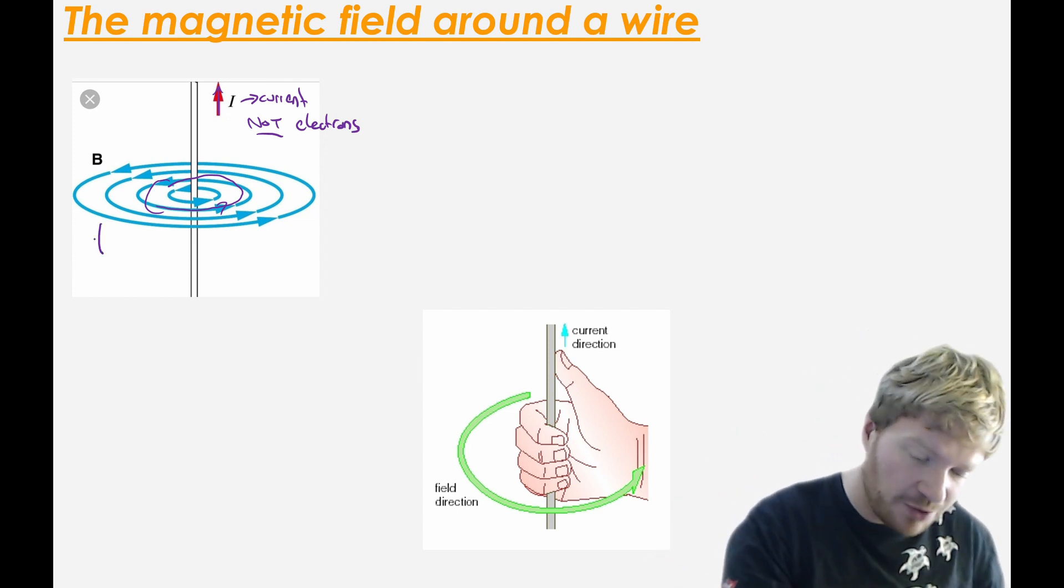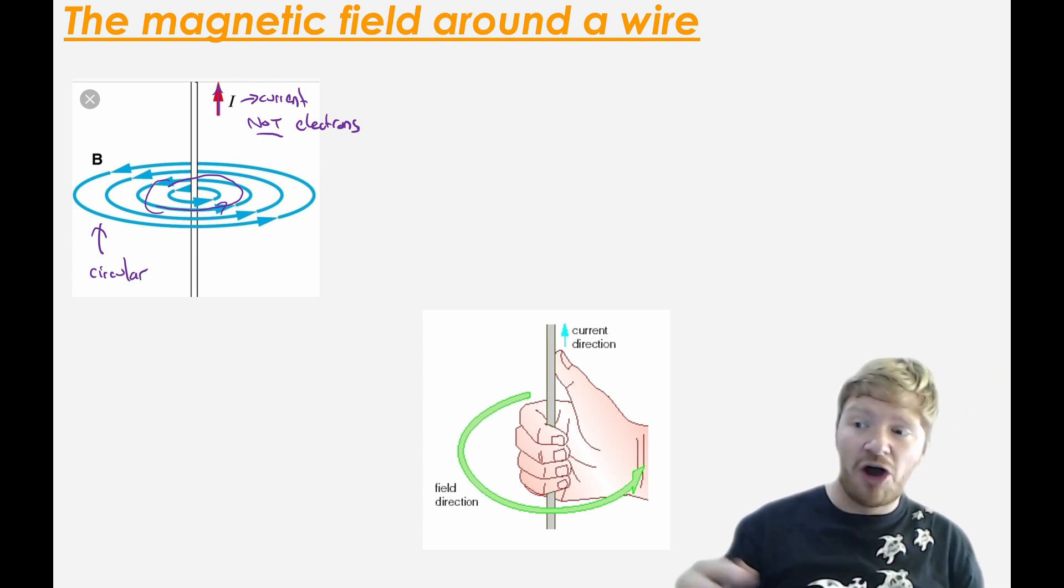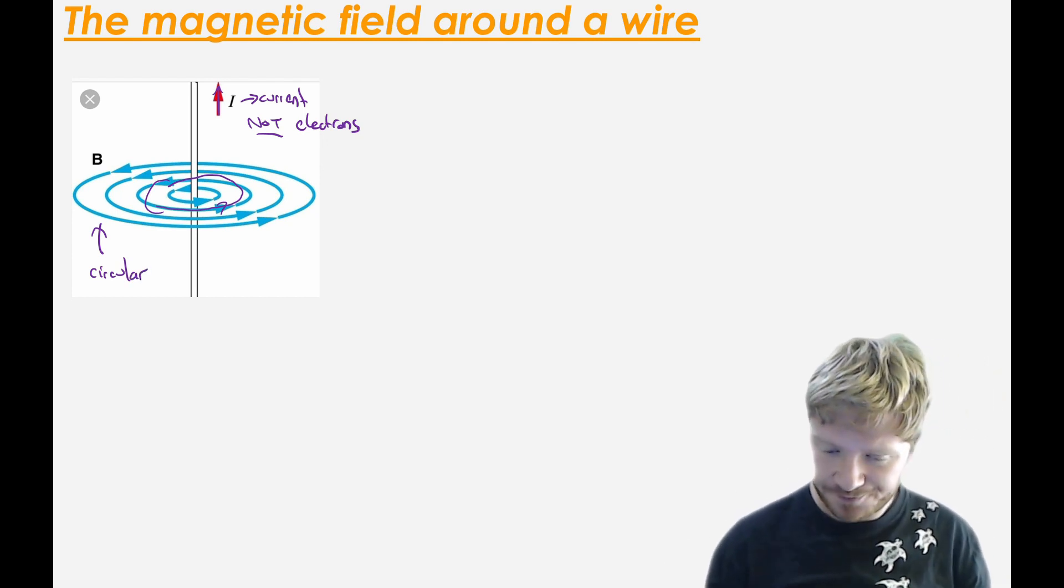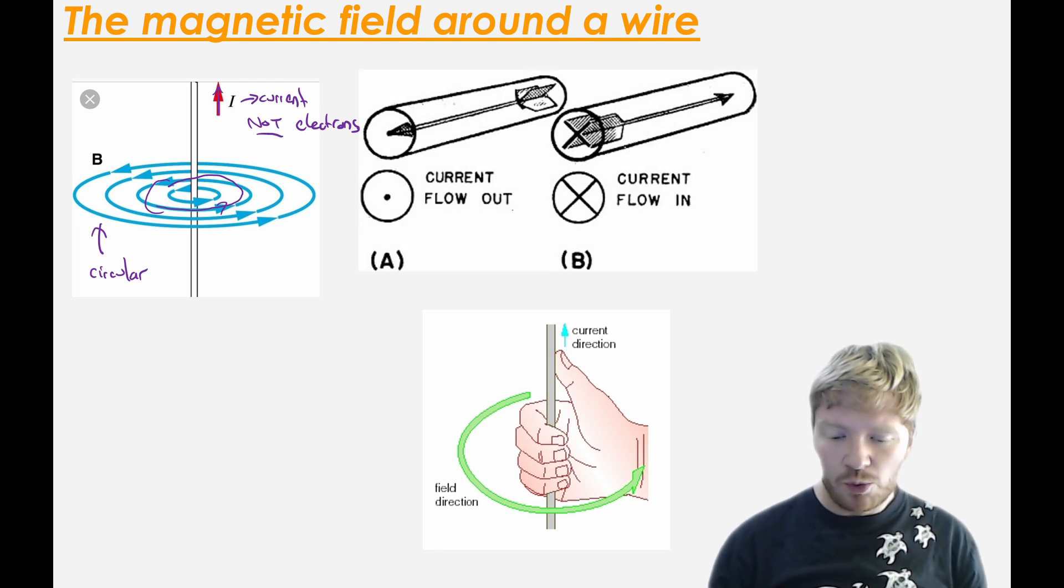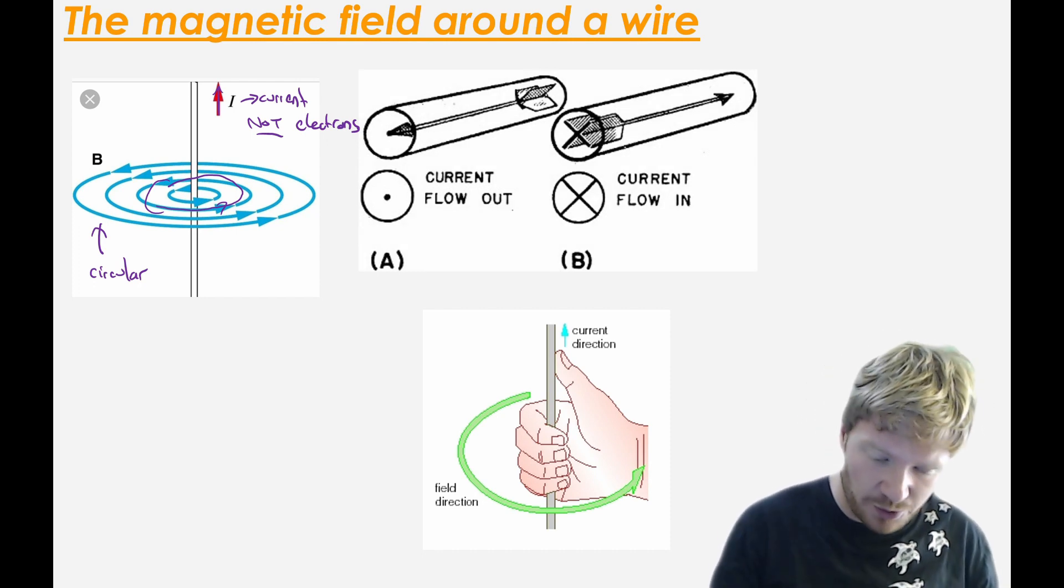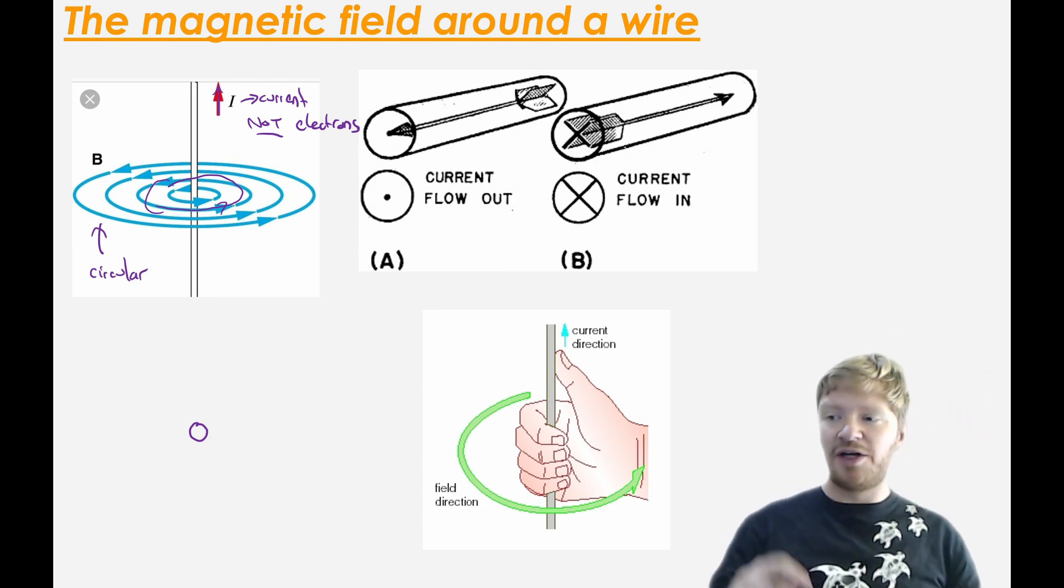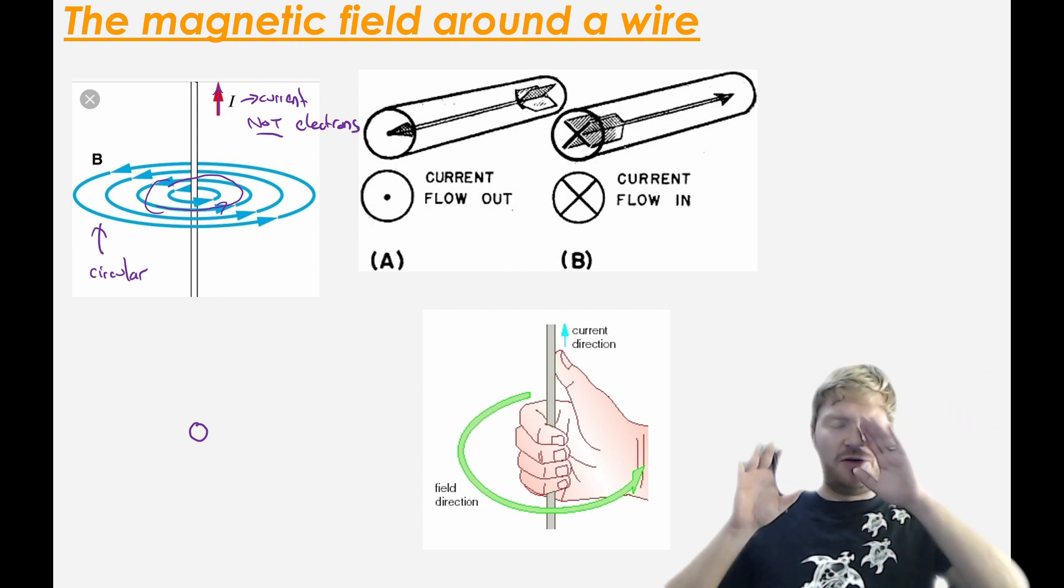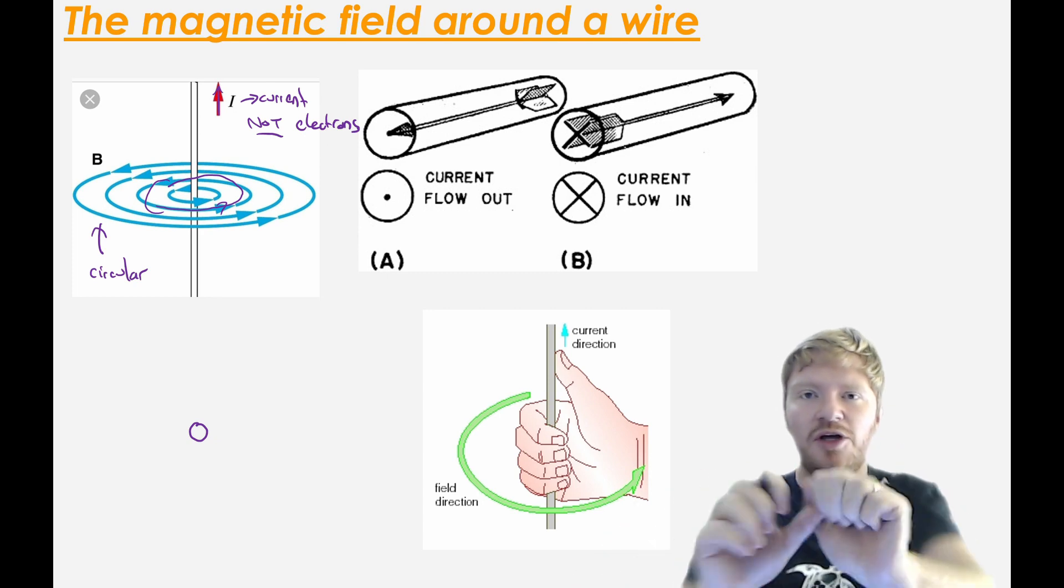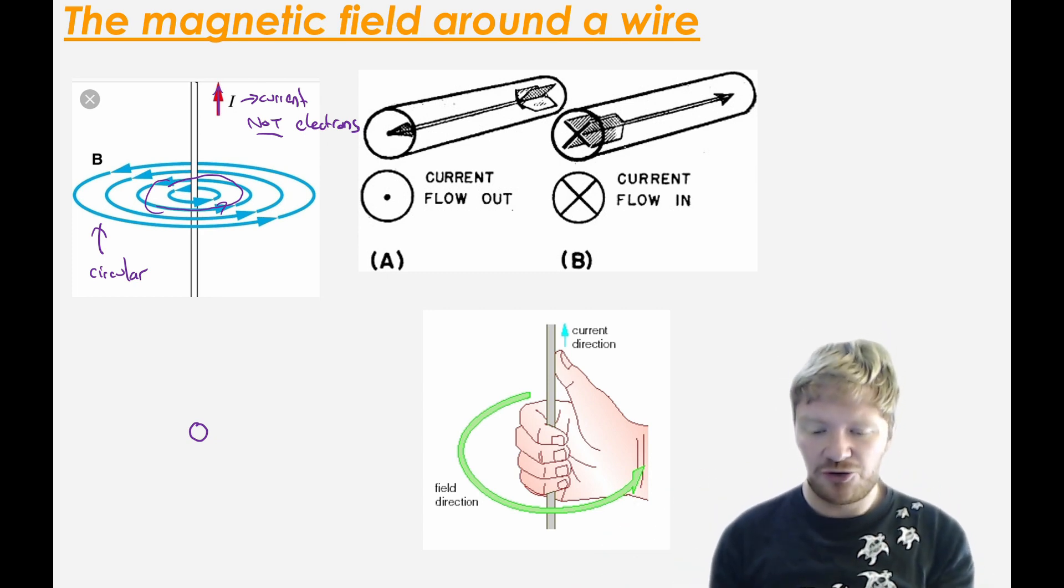So this type of field is called a circular field because it goes around. It's a circle. What we're going to see is we often want to talk about, well, here's a wire and I've got current going from the outside into the screen. So how do I do that?